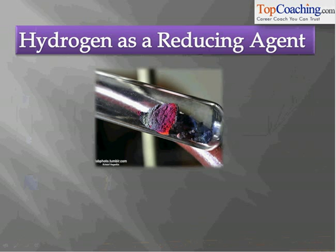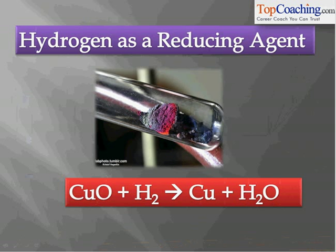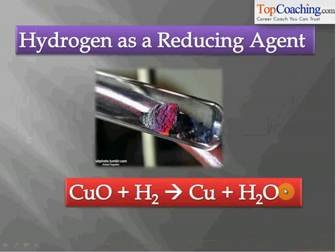Hydrogen is very popular as a reducing agent. A reducing agent removes oxygen from another substance or adds hydrogen to it. For example, CuO + H₂ gives Cu + H₂O. In this reaction, hydrogen takes away oxygen from copper oxide to form water, leaving copper alone. This removal of oxygen is called reduction, and hydrogen is the reducing agent.